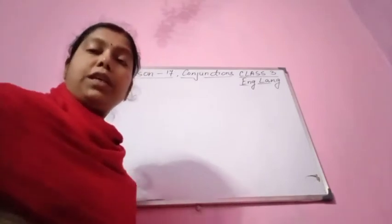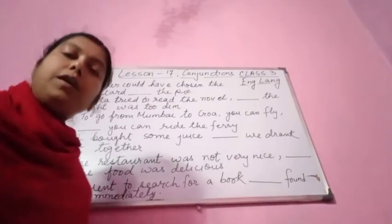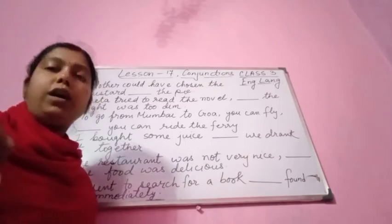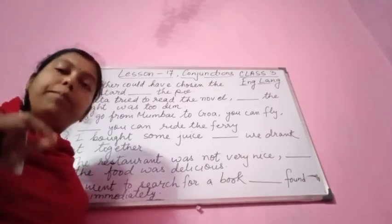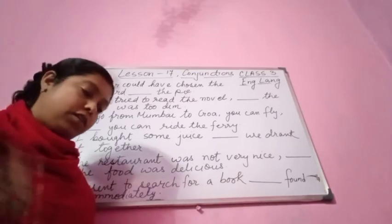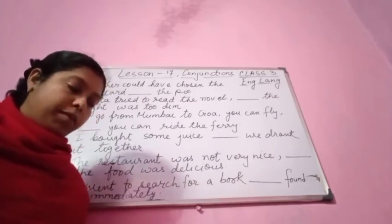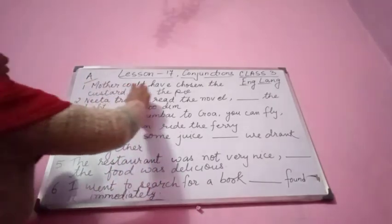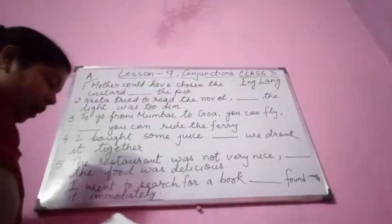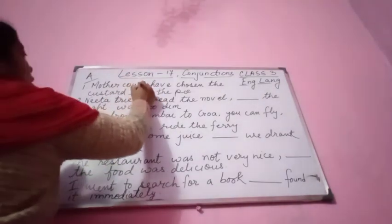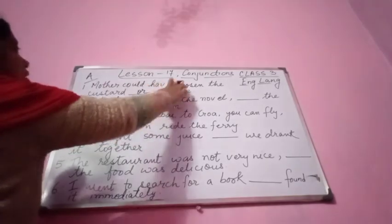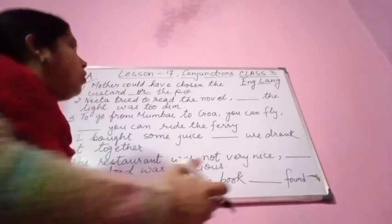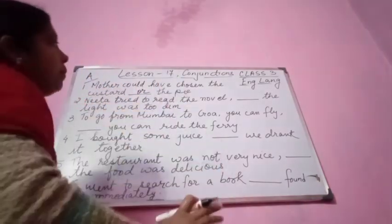We are going to do Exercise A. Fill in the blanks with 'or,' 'but,' or 'and.' Number one: Mother could have chosen the custard — dash — the pie. Here the word 'chosen' tells us a selection is being made, so we add 'or.' Mother could have chosen the custard or the pie.